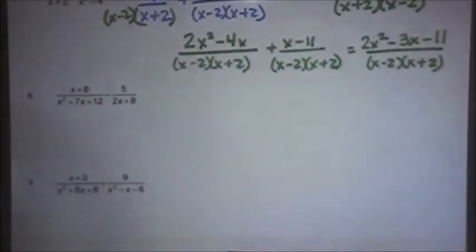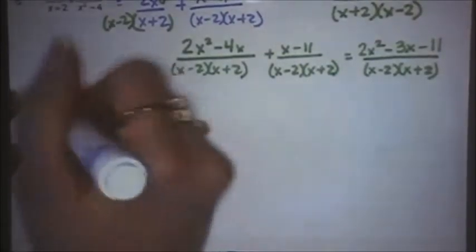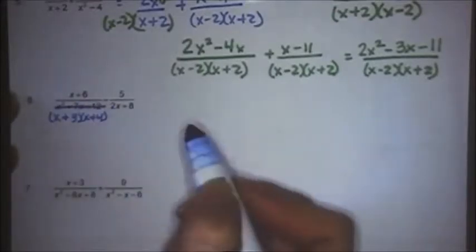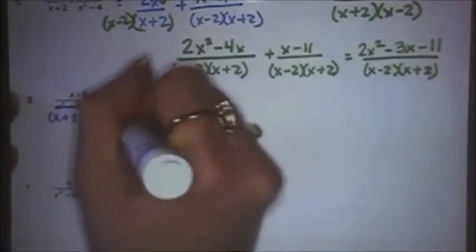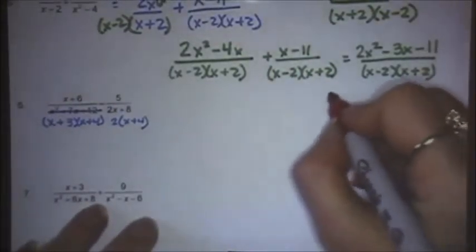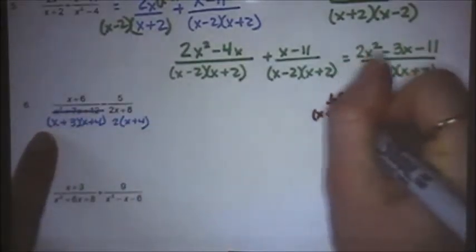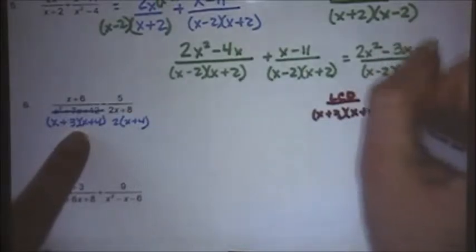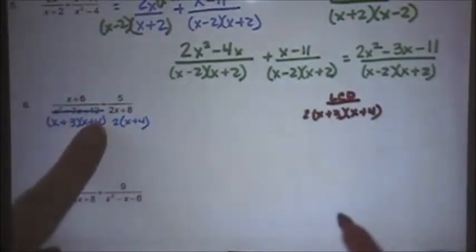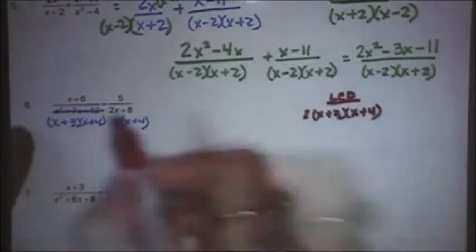So in order to determine what my LCD must be on number 6, I have to determine what pieces I have by factoring. The first denominator factors as x plus 3, x plus 4. The second denominator factors as 2 and x plus 4. Now if I want to determine what my LCD is, I'll come over to the side and create a little LCD box, writing down each piece so I don't miss anything. My first fraction has x plus 3 and x plus 4. My second fraction has a 2 — not in my LCD box yet, so I put it in — and an x plus 4, which I've already written. So my LCD actually has three total pieces, and I need to make sure each fraction has all three.